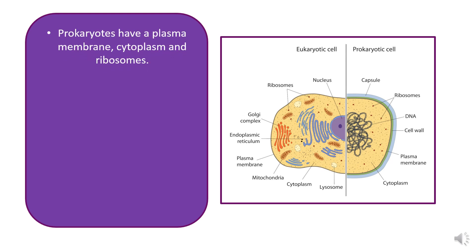Prokaryotes are similar to eukaryotic cells in that they have a plasma membrane, and a cytoplasm where chemical reactions take place — the cytoplasm also has lots of enzymes. Prokaryotes also have ribosomes in order to produce proteins. The ribosomes are slightly different, but we'll see that on the next slide.